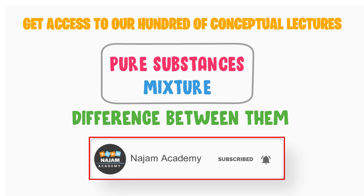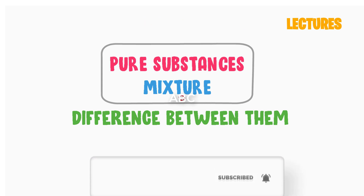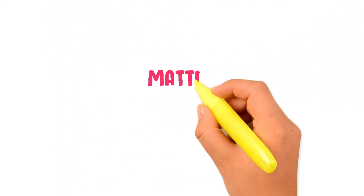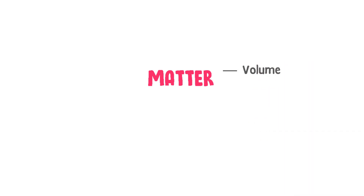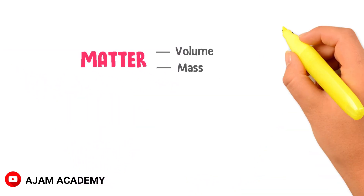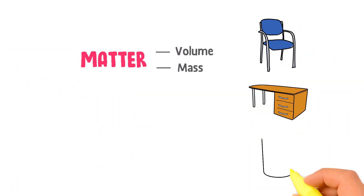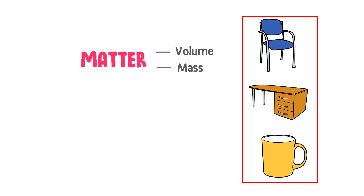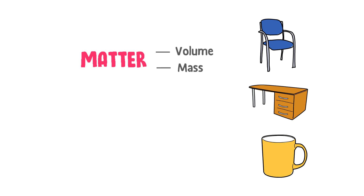Let me teach you about the classification of matter. We all know about matter — anything which has volume and has some mass is called matter. For example, a chair, a desk, a cup, etc., are all matter because they occupy some space and have mass.